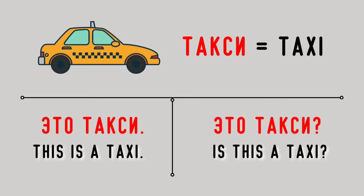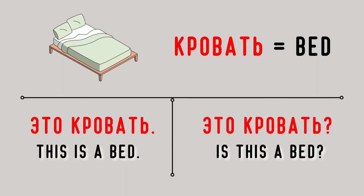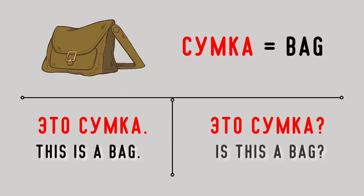Такси — taxi. Это такси. This is a taxi. Это такси? Is this a taxi? Кровать — bed. Это кровать. This is a bed. Это кровать? Is this a bed? Сумка — bag. Это сумка. This is a bag. Это сумка? Is this a bag? Это сумка?